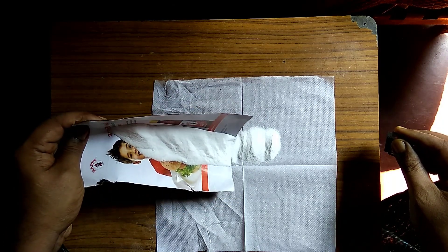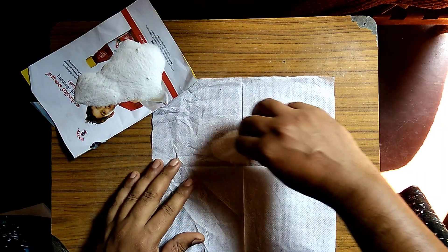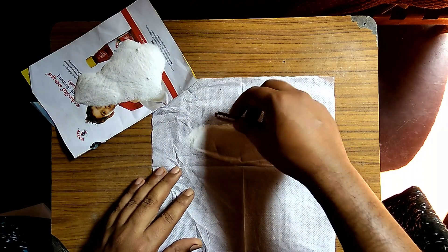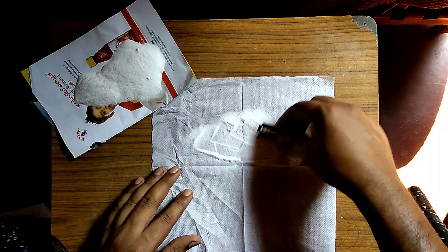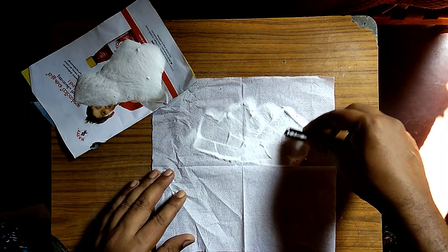We need to take around two tablespoons of baking powder on the tissue paper. Spread it evenly into half part of the tissue paper. A thin layer is needed across this. Do it very carefully.